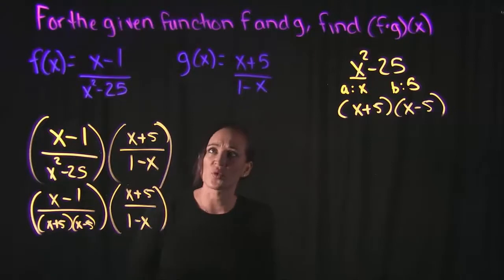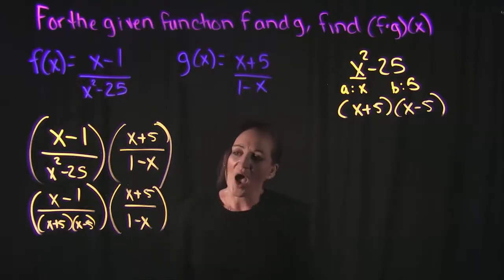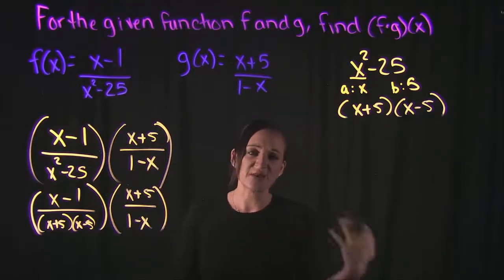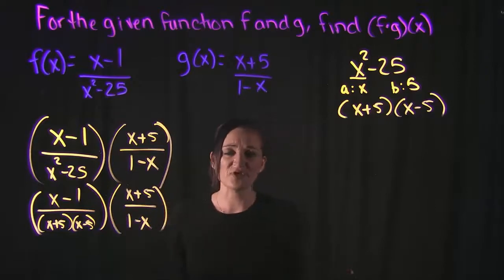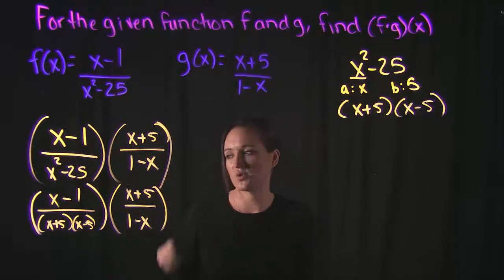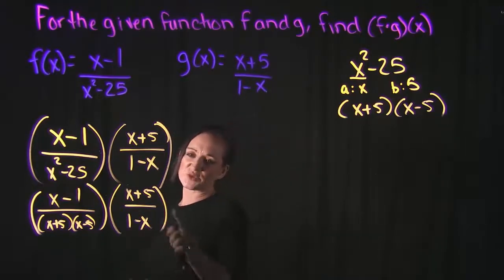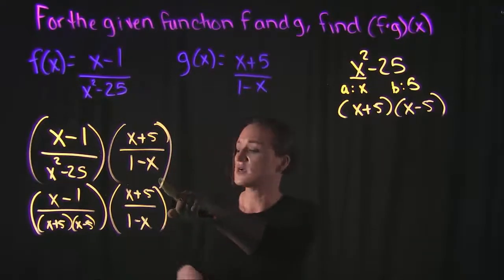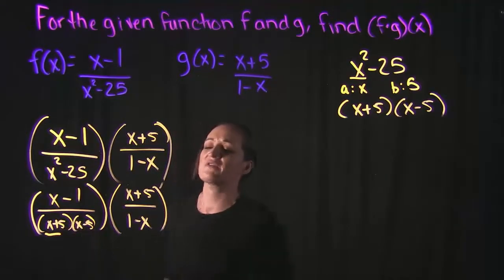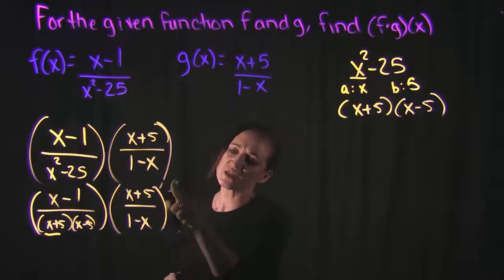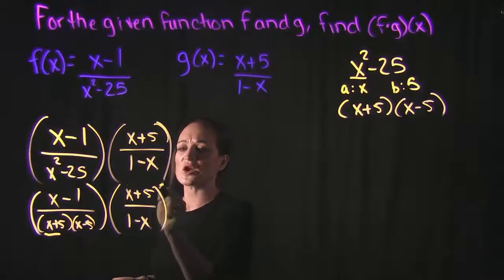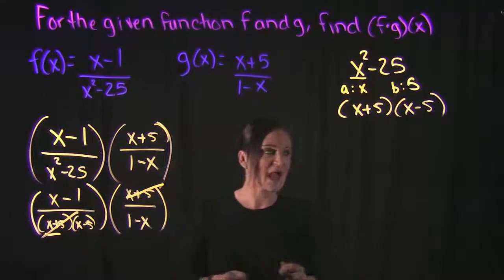We also need to remember a rule in math that says that if you have the same thing in the numerator as you have in the denominator, they cancel out to a 1. And I say that because we have an x plus 5 right up here, we also have an x plus 5 down here. And because 1 is in the numerator, 1 is in the denominator, we can cancel those out.